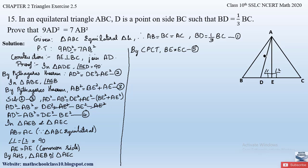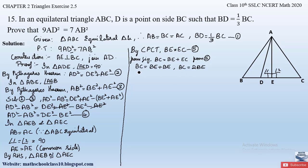From the figure, BC is equal to BE plus EC. Substituting EC equals BE from equation 5, we get BC equals BE plus BE, that is BC equals 2 BE, so BE equals half of BC. Let this be equation 6. We have now found the BE value to substitute into equation 4. Next, let us determine the DE value.